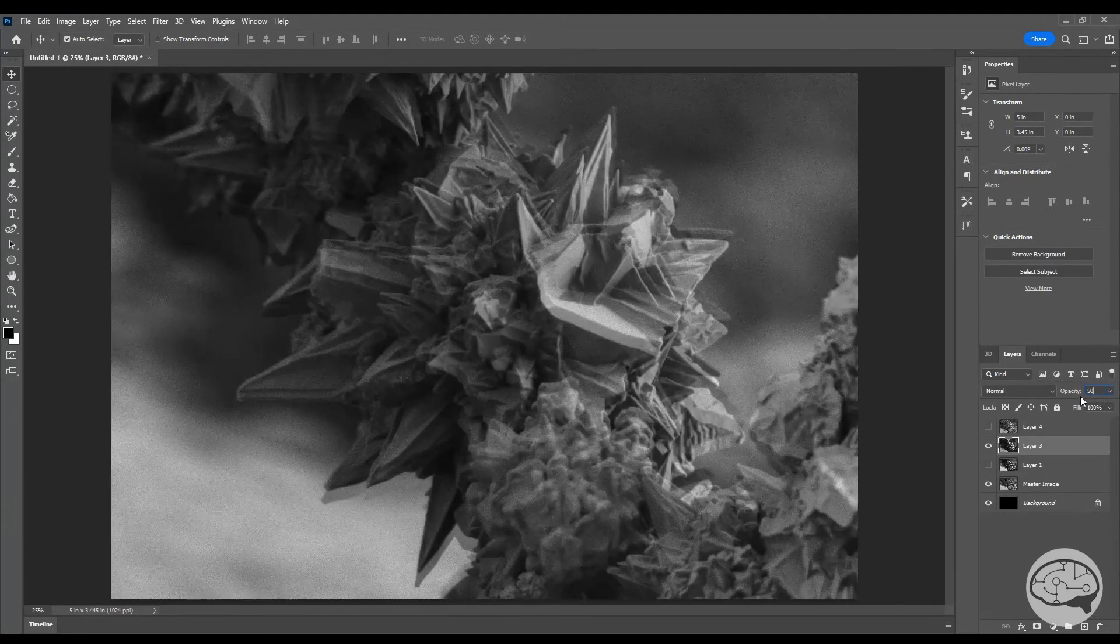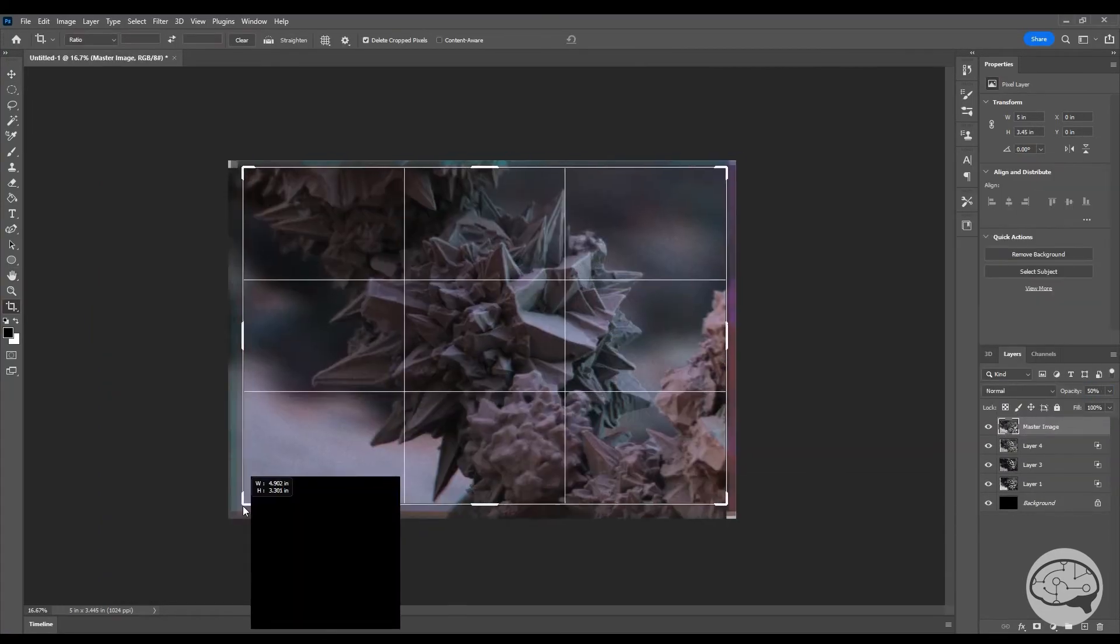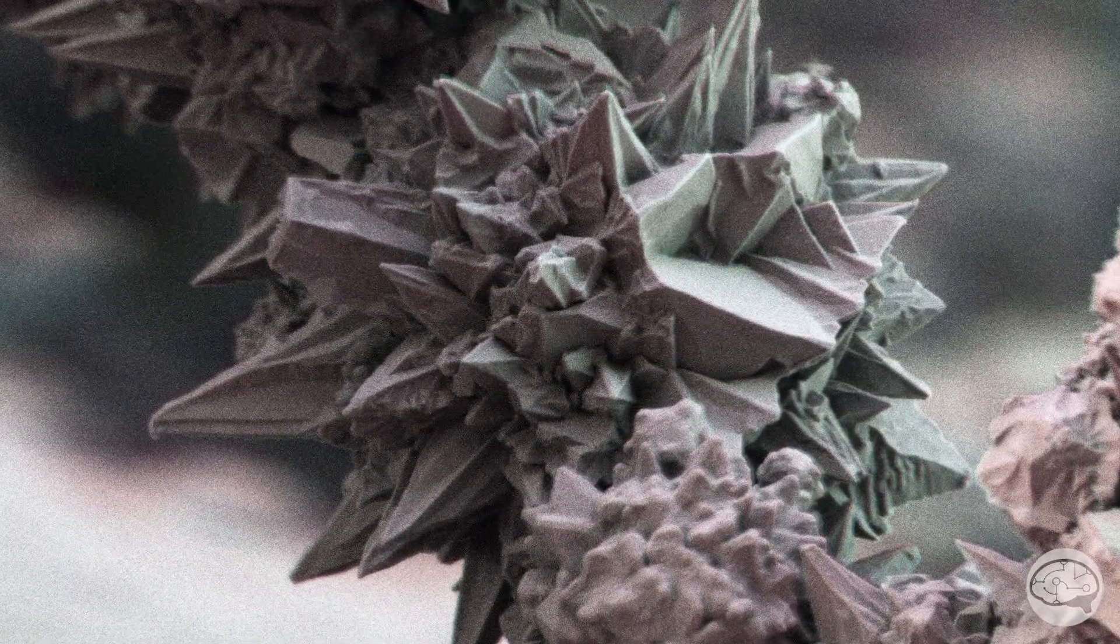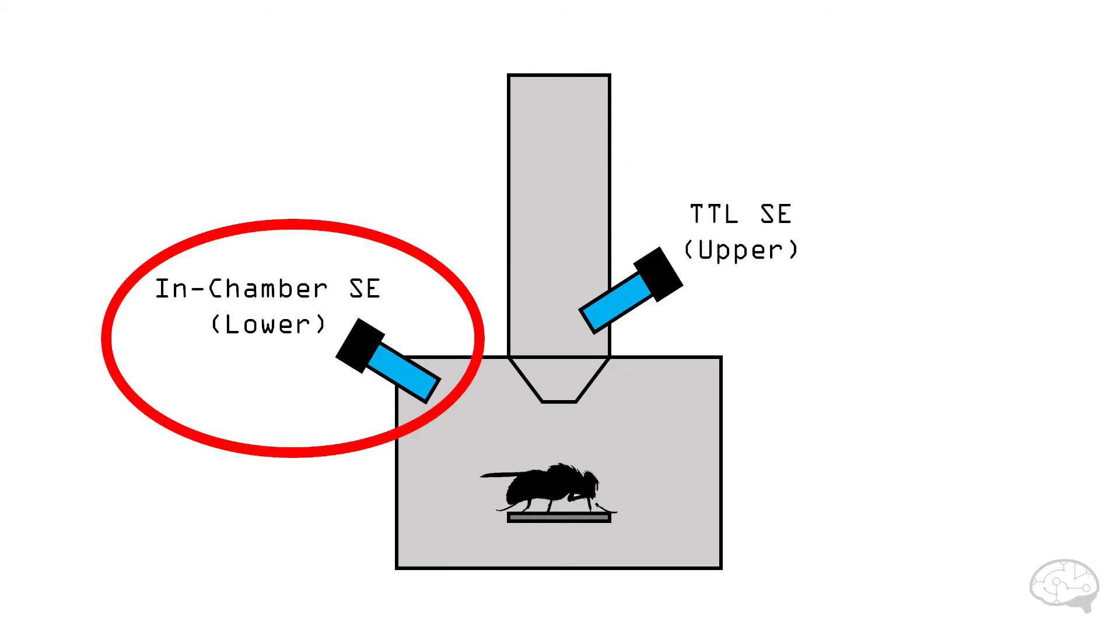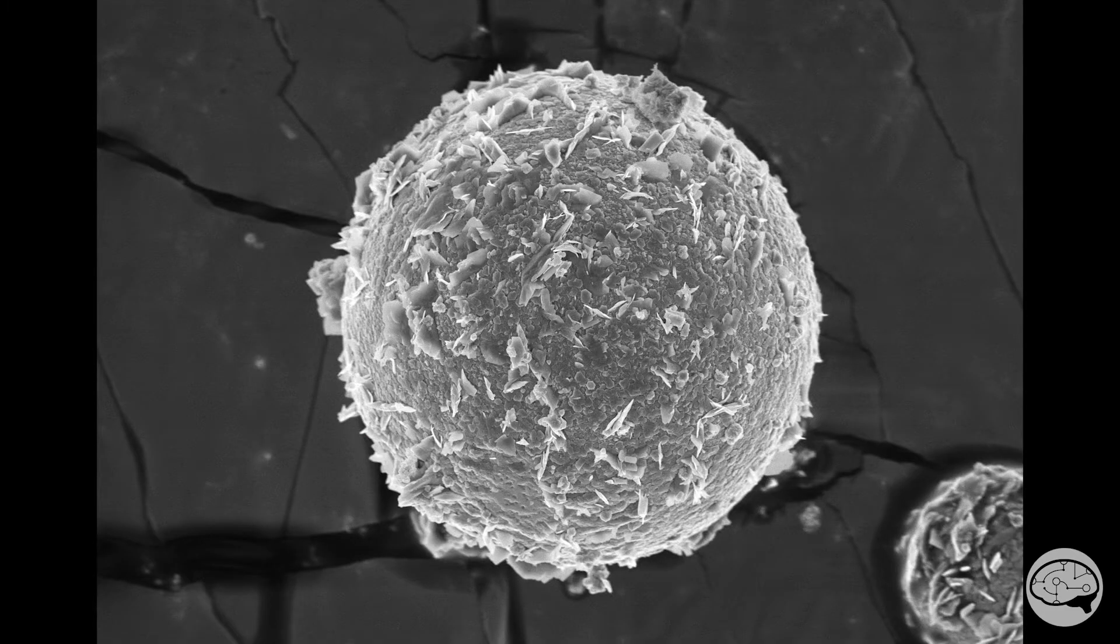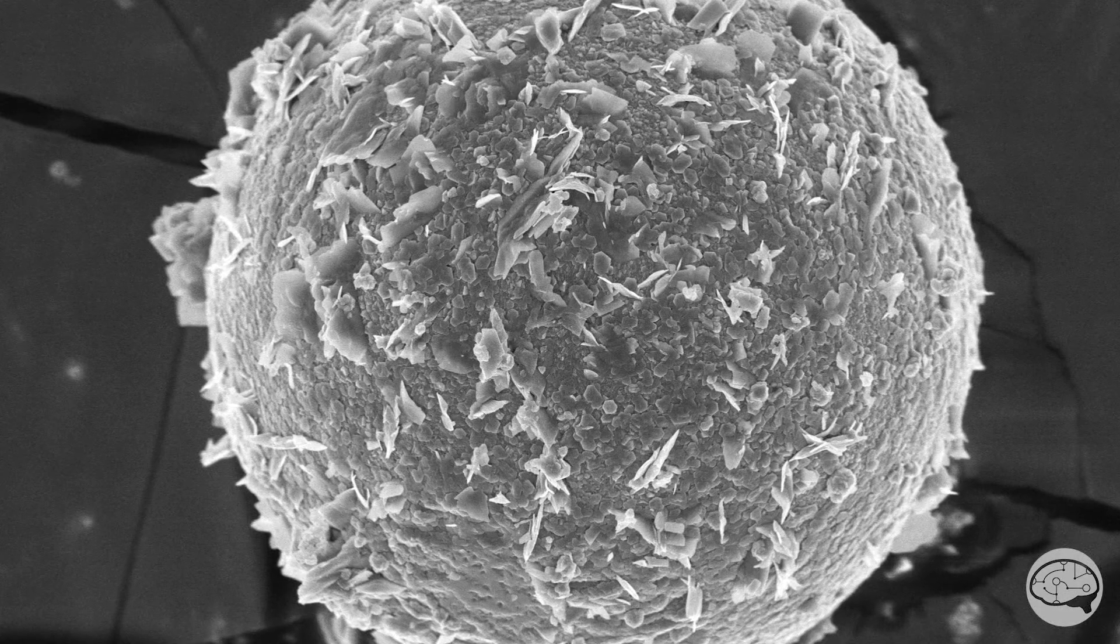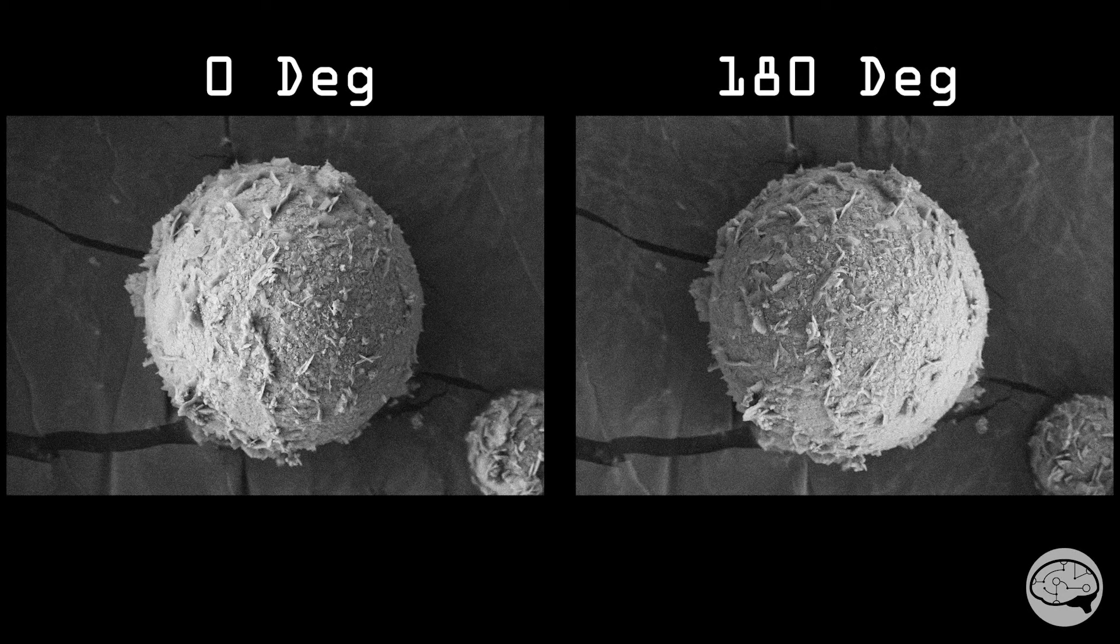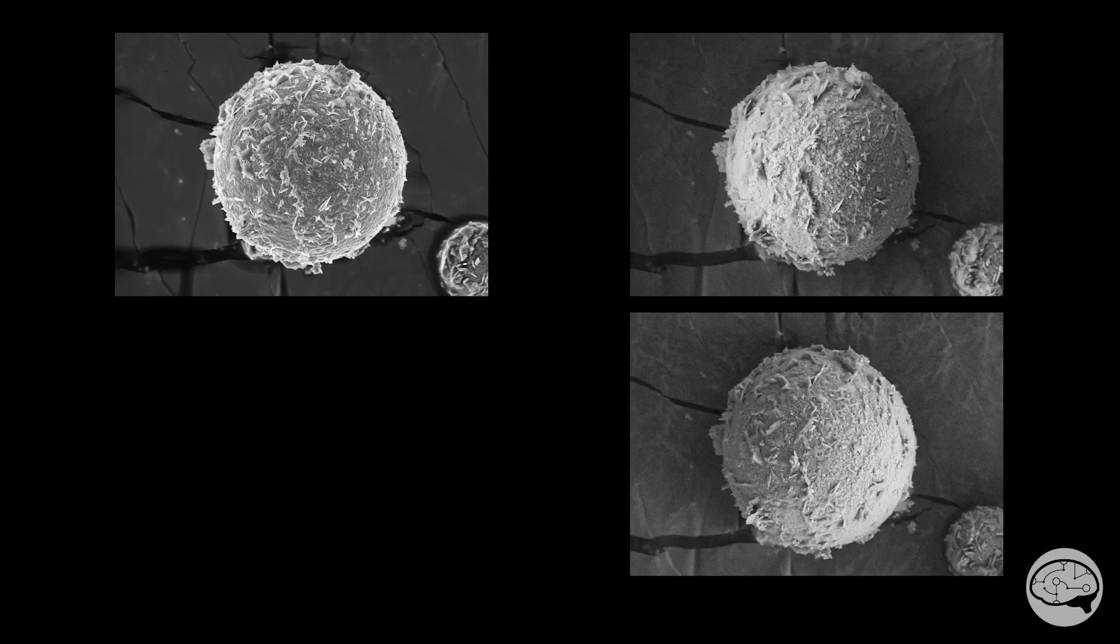Once you have all these images in Photoshop, you'll need to align them and maybe rotate them a little bit. Then choose one of them to be your master image, and the others as your color layers. One other thing I tried in my search for colorization mastery is to use an upper or through the lens detector to make a master image, and then take multiple images with a lower or in-chamber detector as the color images. I did this because the upper detector image is going to have completely even illumination since it's looking at the sample directly above it. Also, you'll be able to get very high resolution details from this upper detector. It just makes a great master image. The lower detector images may not have as high resolution as the upper detector, but they will be directional, i.e. they will have shadows on them. So I would take one master image from the upper detector and two color images from the lower detector.